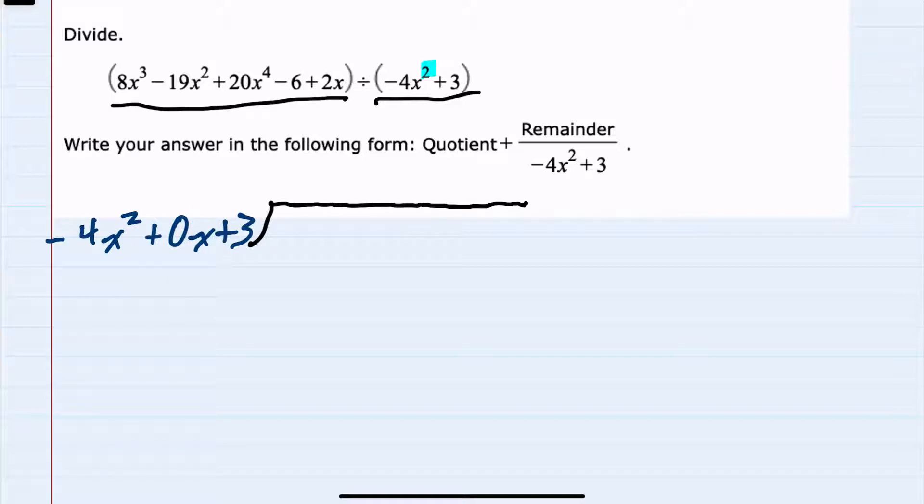When I look at the dividend, I notice that it is not in descending order. So I'll take this as an opportunity to write it in descending order, which would start with the highest degree 20x⁴, and then I have a plus 8x³, a minus 19x², a plus 2x, and a minus 6.